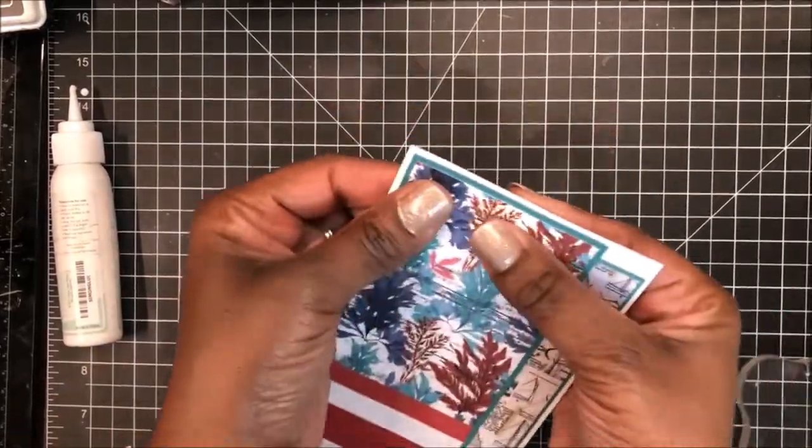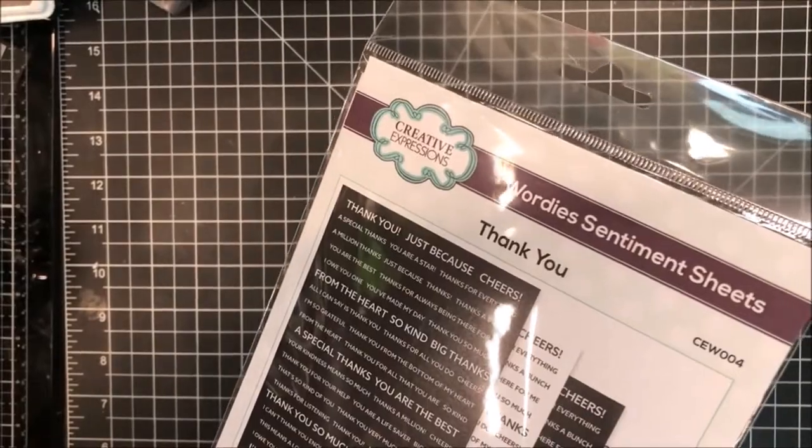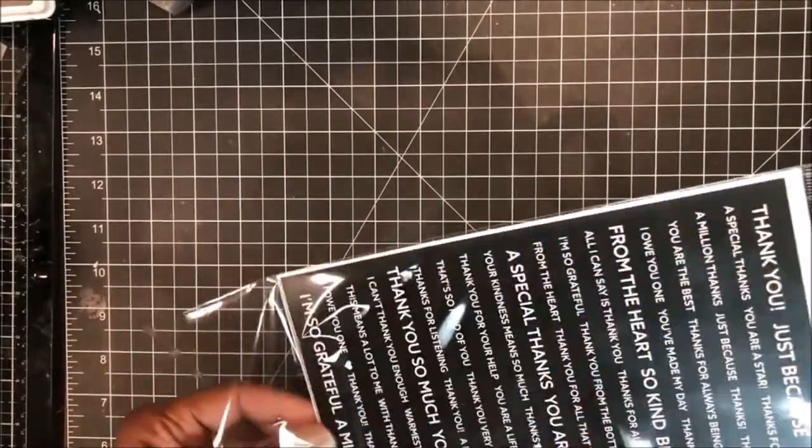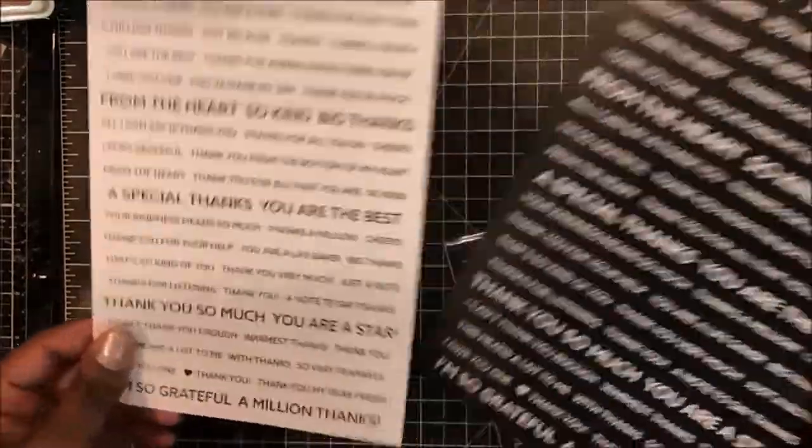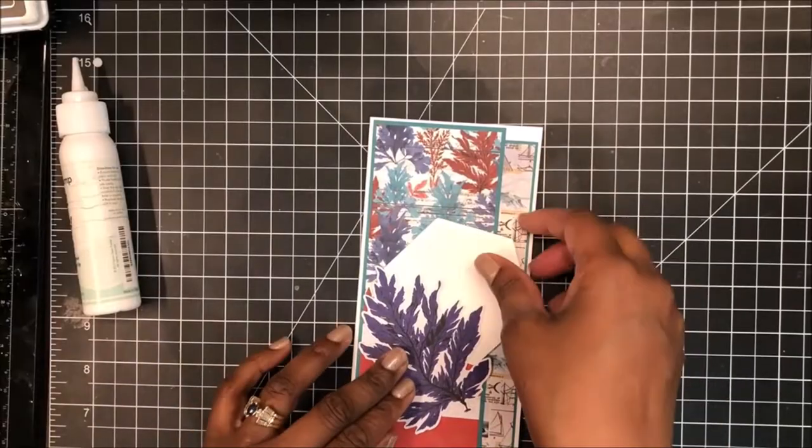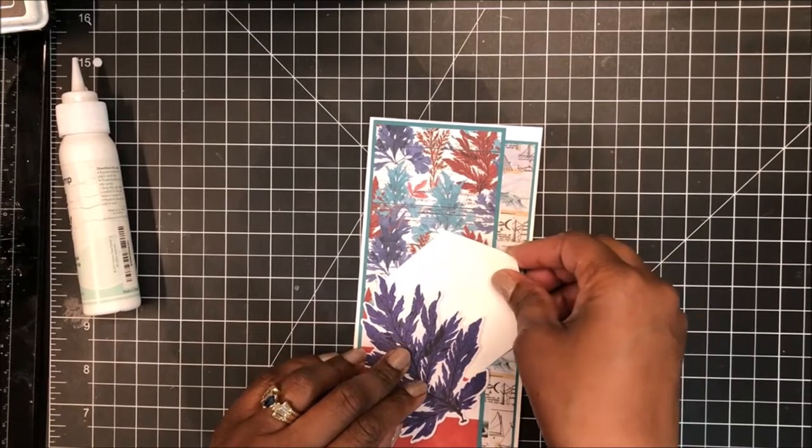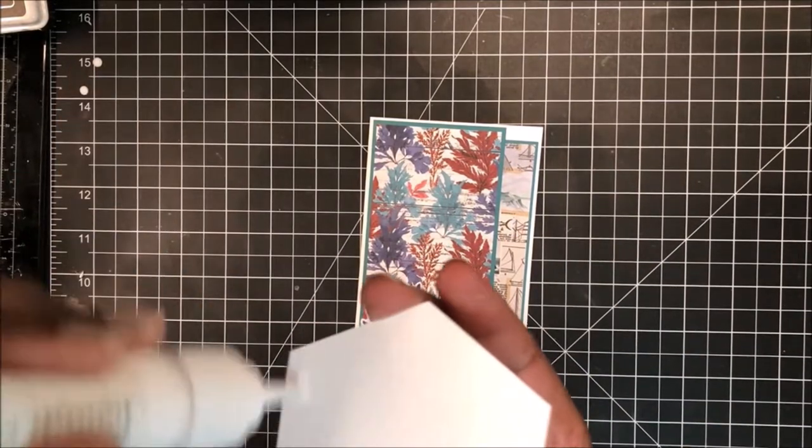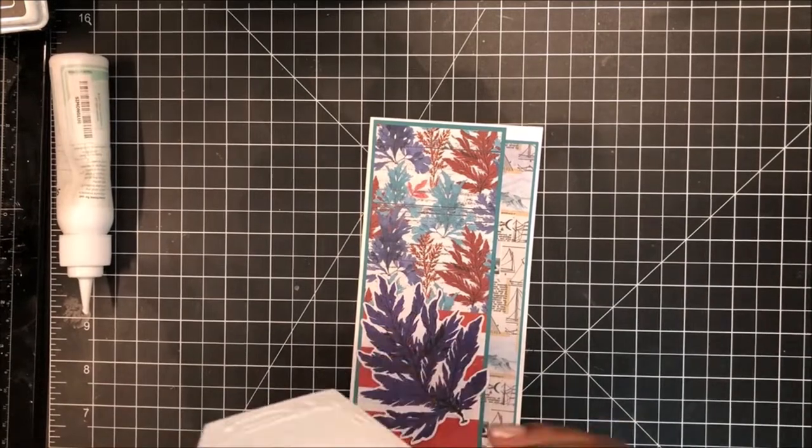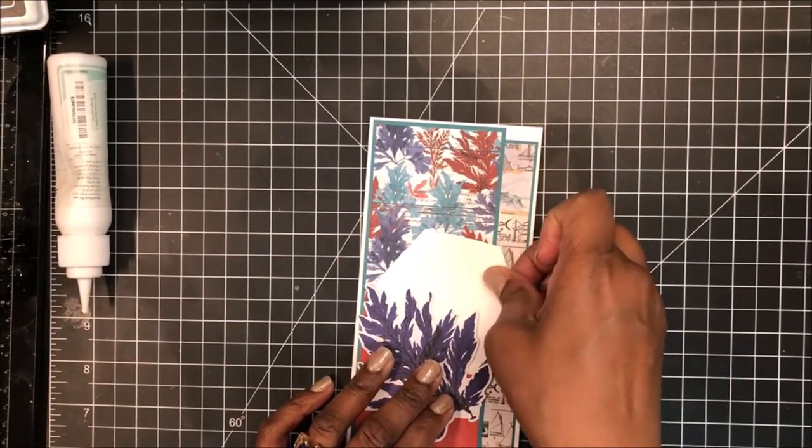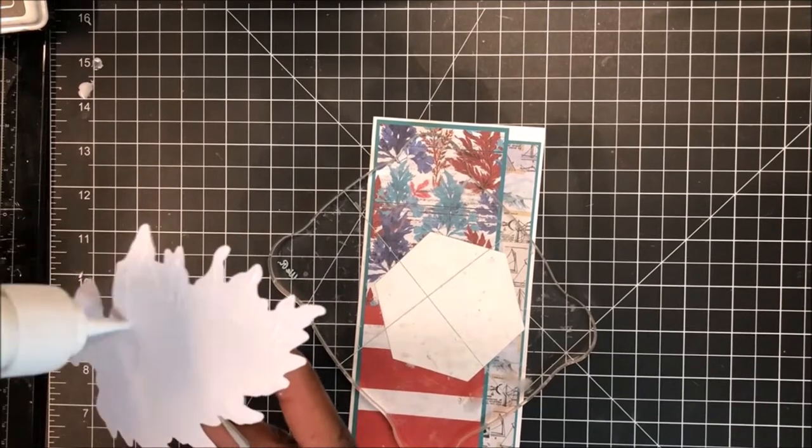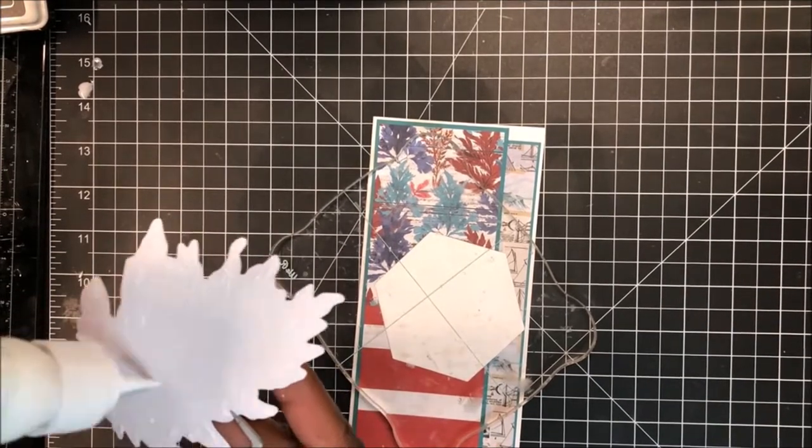And here I'm using Wordy's sentiment sheets by Creative Expressions, the thank you pack and loving these. They come in black and white and there's a sentiment that says you are a lifesaver. And I thought this was very fitting for this design. That's what I'll be using. I've also die cut a large hexagon from the W plus nine hexagon stackers. And that's just out of white cardstock. And I'm using my large floral leaf image. What is that? Seaweed, I'm going to call it using that to position where I want my hexagon and then I will affix that with glue also.